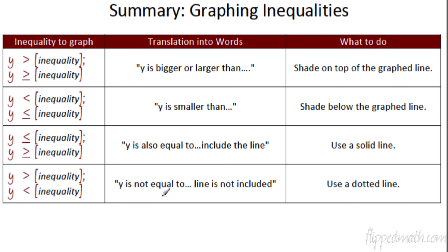Let's summarize the graphing part in a nice little table. If you get y is greater than, or greater than or equal to — translation: y is bigger or larger than — you shade on top of the graph line because the numbers on top are bigger. If y is less than, or less than or equal to — that's the same as smaller than — you shade below the graph line. For the line type: if it's less than or equal to, or greater than or equal to, it's also equal to, so include the line — use a solid line. If it's just greater than or less than, the line is not part of the inequality — use a dotted line.